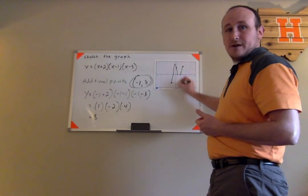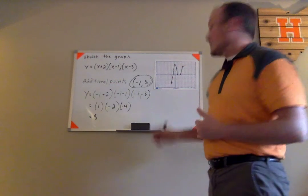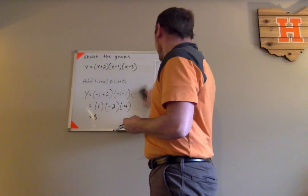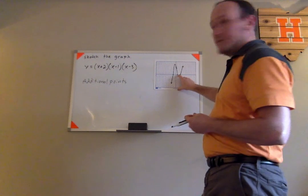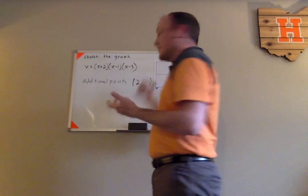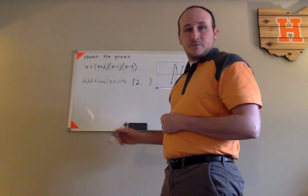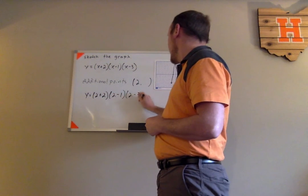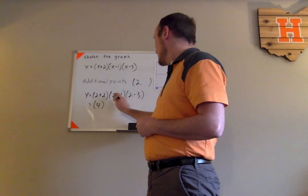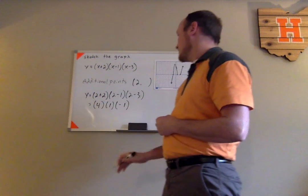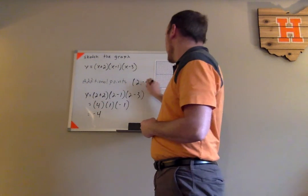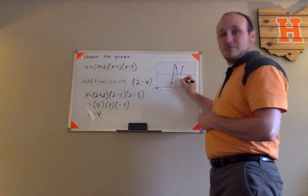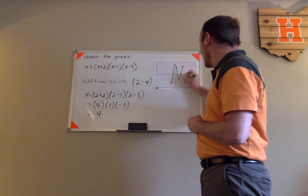Now I want to figure out how low the graph goes between x equals one and x equals three, so I'll plug in x equals two. We have y equals two plus two, times two minus one, times two minus three, which gives four times one times negative one, which is negative four. So (2, −4) is another point on this graph. That's not guaranteed to be the exact local minimum, but it helps make the sketch slightly more accurate by picking points in between.